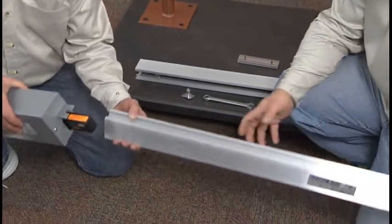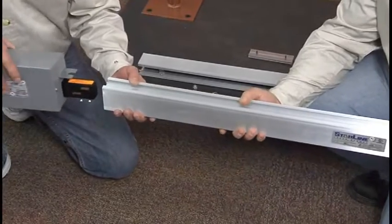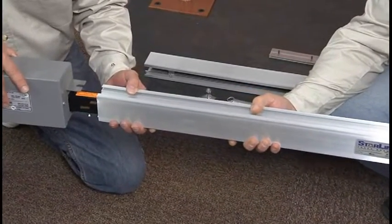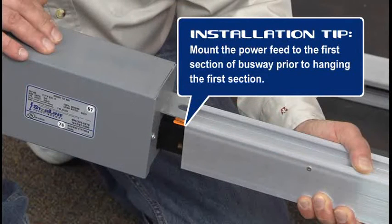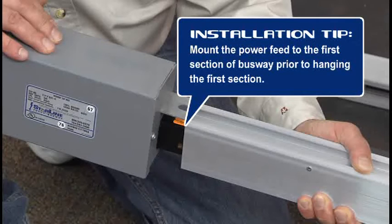Begin installation at one end of the busway, preferably at the end where the power source is located. A helpful hint is to mount the power feed to the first section of busway prior to hanging the first section. Then begin with that assembled section of busway.